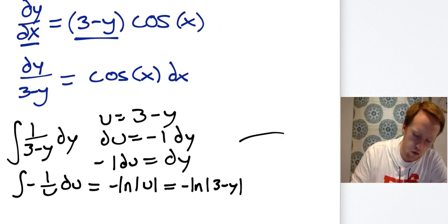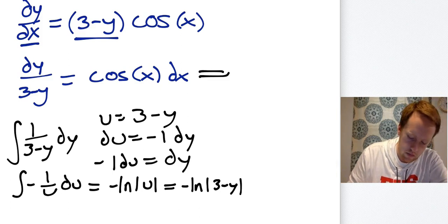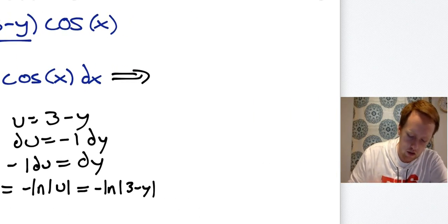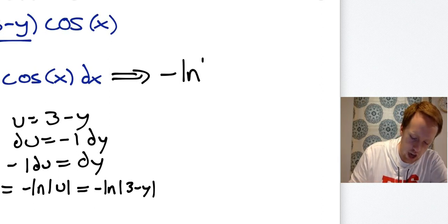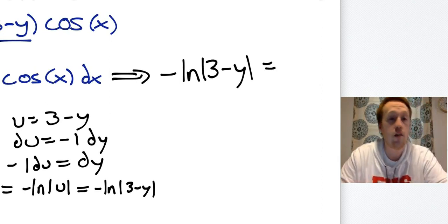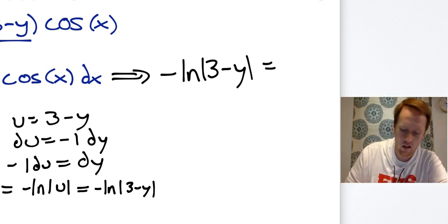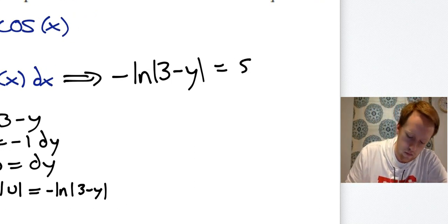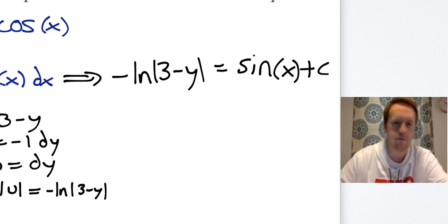So erase that line that shouldn't have been there. So that gives me -ln|3 - y| = sin(x) + c.